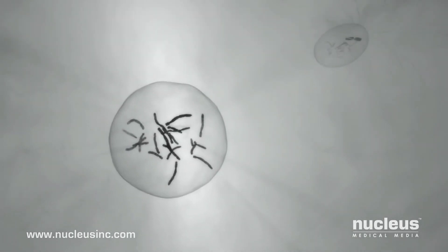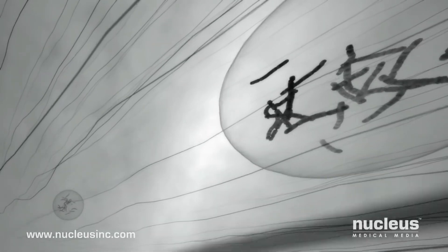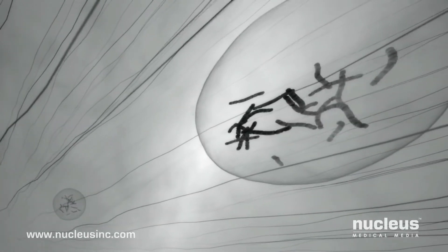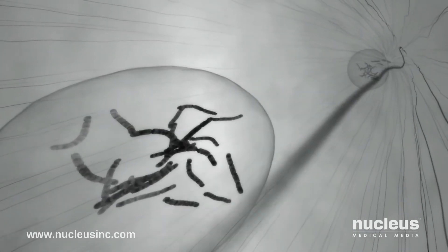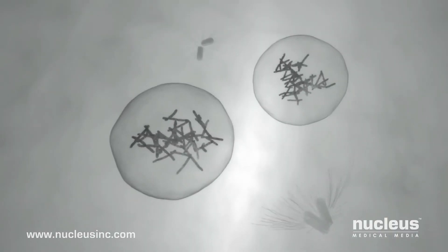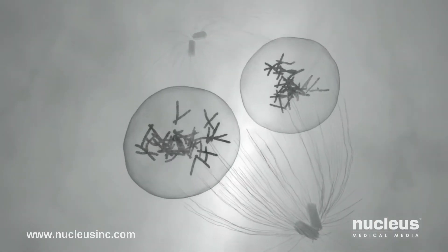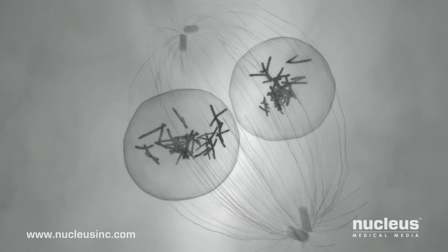As the male and female pronuclei form, spiderweb-like threads, called microtubules, pull them toward each other. The two sets of chromosomes join together, completing the process of fertilization.